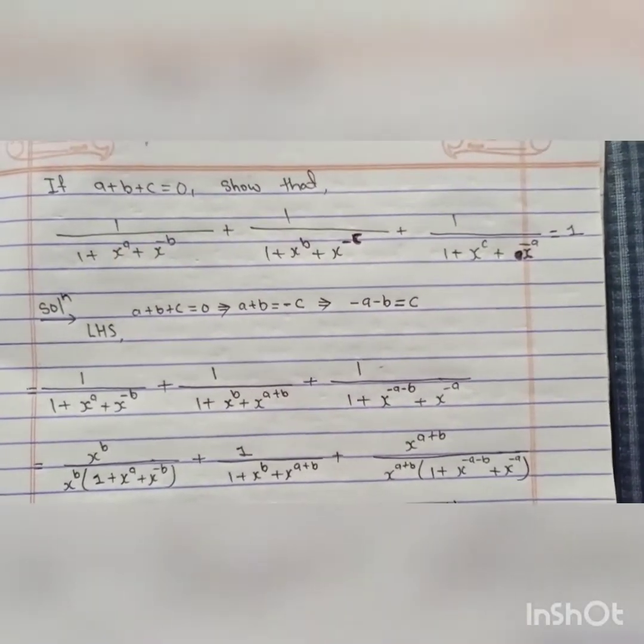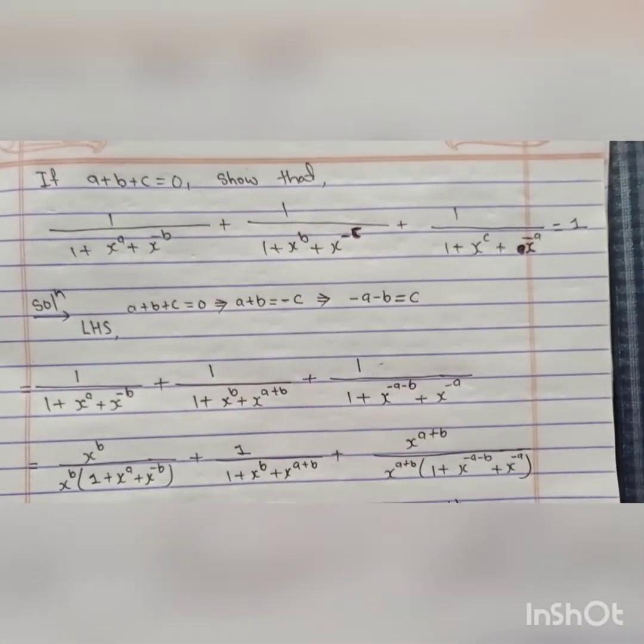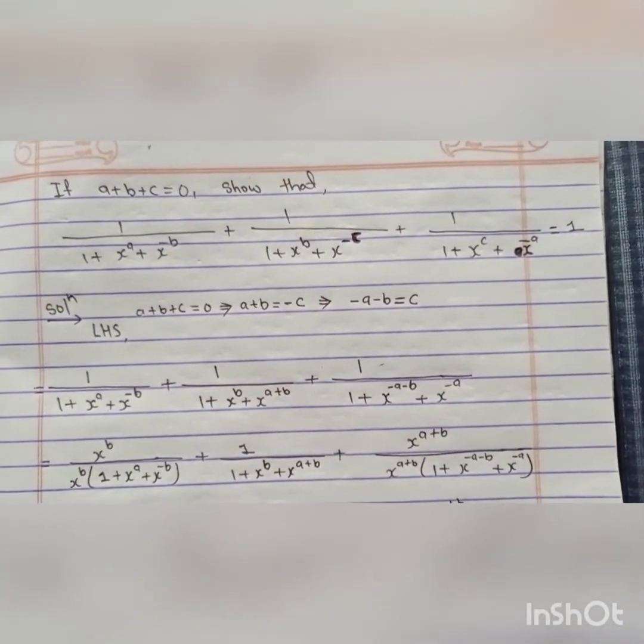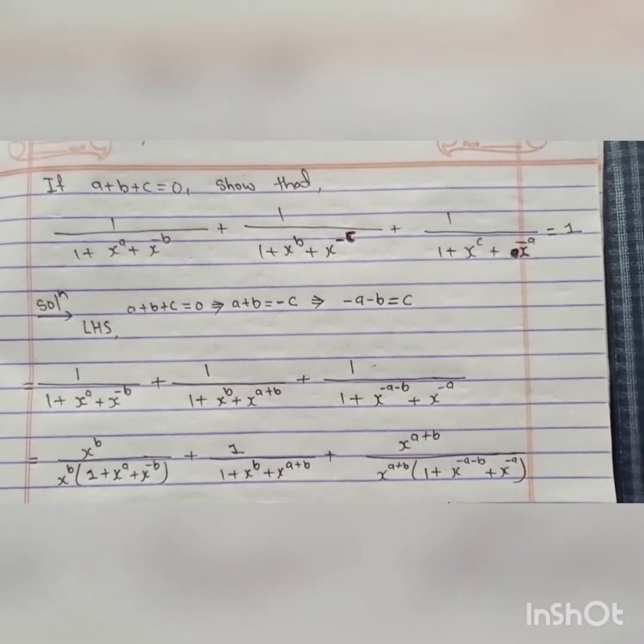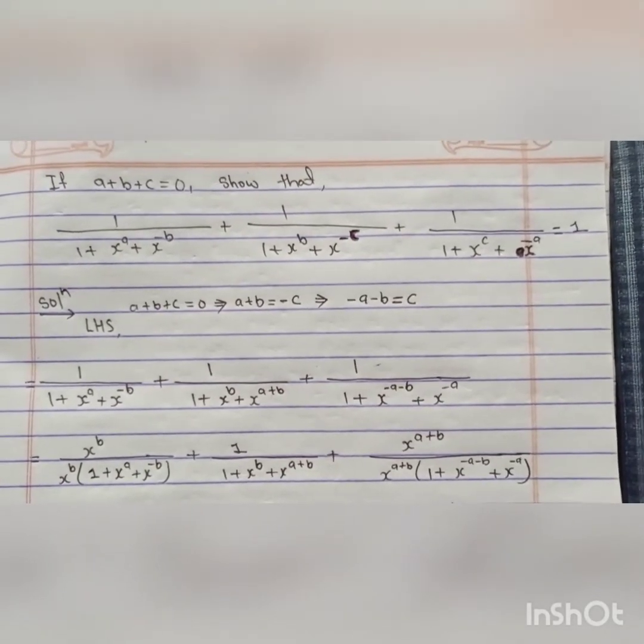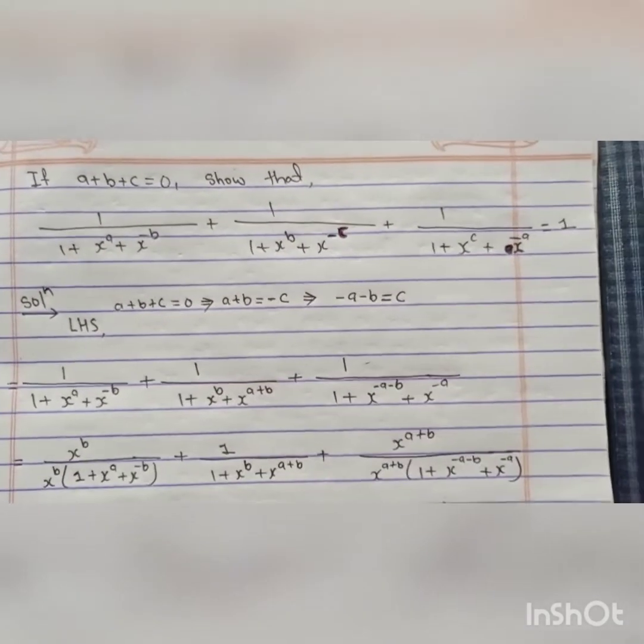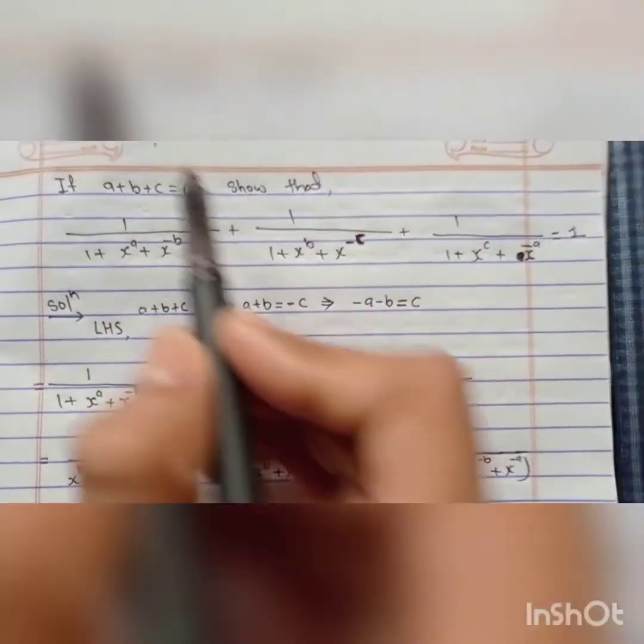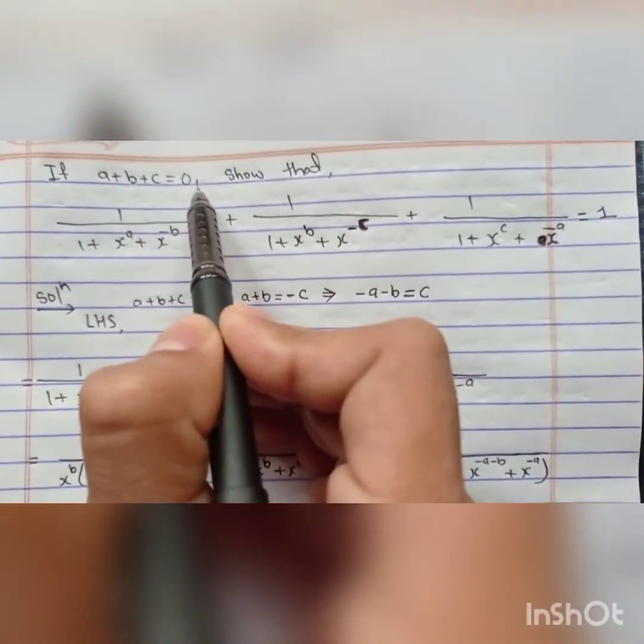Hello everyone, this is one of the most important types of numerical problems that is frequently asked at the class 10 level. Most students find it difficult, so I'll show you one trick so that you can solve any conditional numerical by that trick. The trick is when a plus b plus c equals zero.